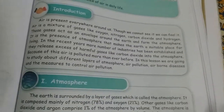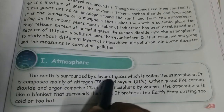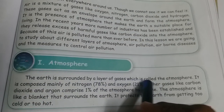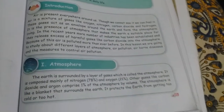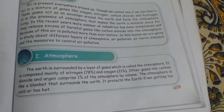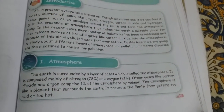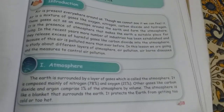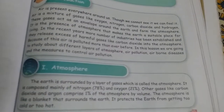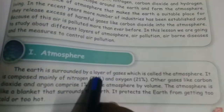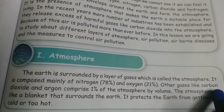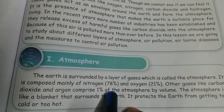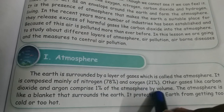So, what is atmosphere? The earth is surrounded by a layer of gases which is called atmosphere. The atmosphere is composed mainly of nitrogen — nitrogen is 78% and oxygen is 21%. Other gases like carbon dioxide and argon comprise 1% of the atmosphere by volume.